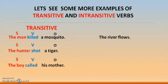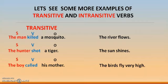Now: 'The river flows' — we don't require an object here; it's a complete sentence. 'The sun shines.' 'The birds fly very high.' These sentences are complete in themselves, so no object is required. These are intransitive verbs.